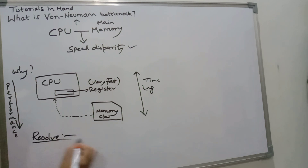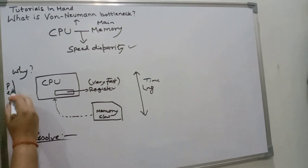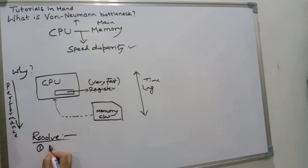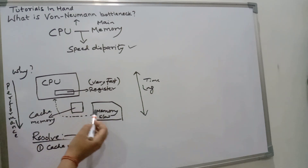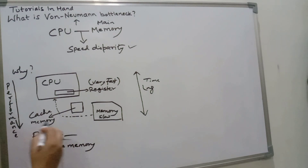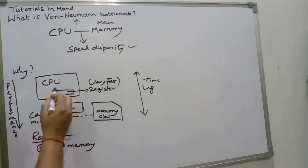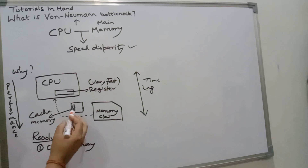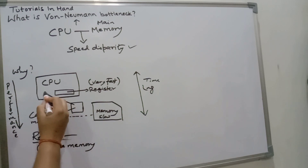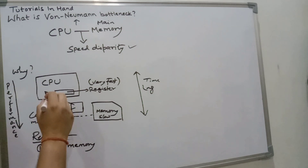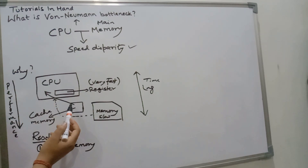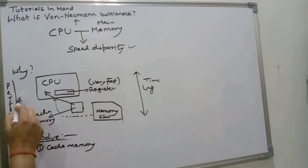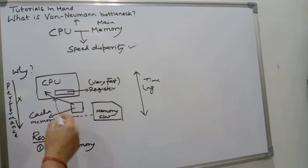To resolve this issue, you can make use of cache memory instead of, or installed between, the CPU and main memory. Cache memory is a special type of memory which has exactly the same speed as that of the registers or CPU. As a result, it provides data and instructions to the CPU at the same speed it requires, thus eliminating the Von Neumann bottleneck and ensuring performance does not take a hit.